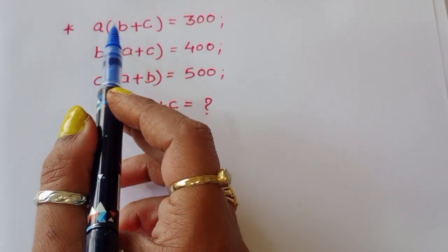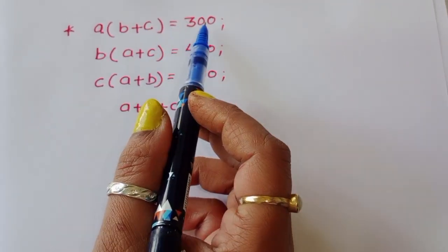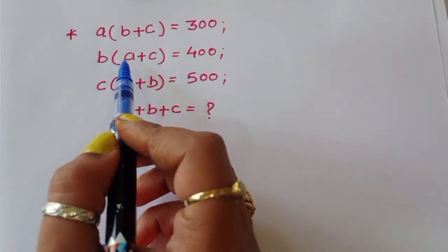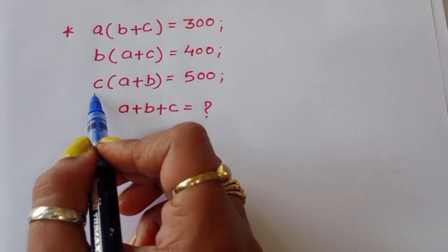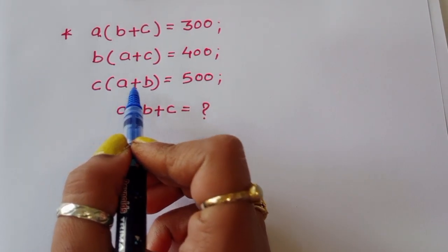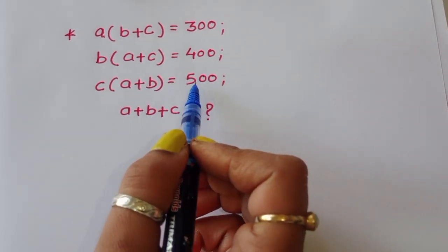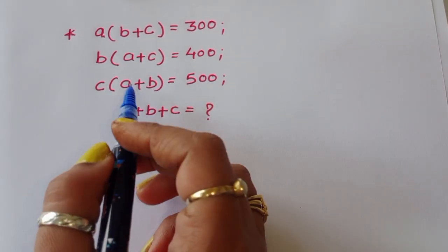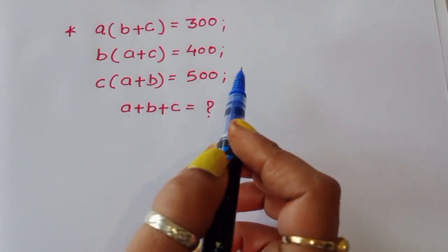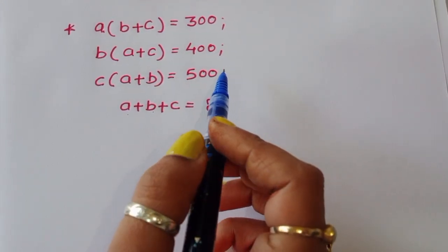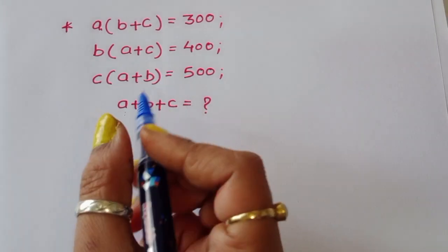Given: A times (B plus C) is equal to 300, B times (A plus C) is equal to 400, and C times (A plus B) is equal to 500. We have to find out the value of A plus B plus C.